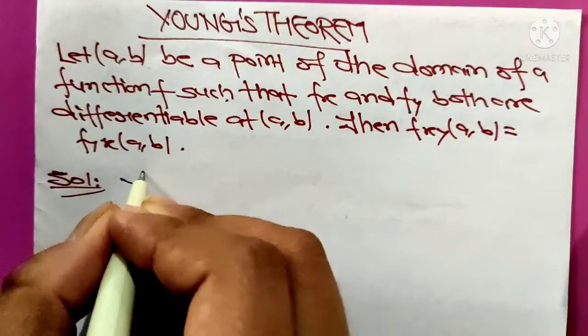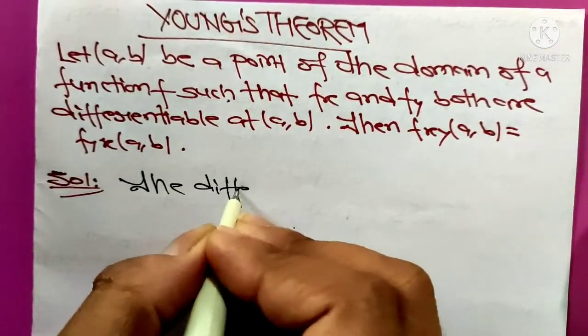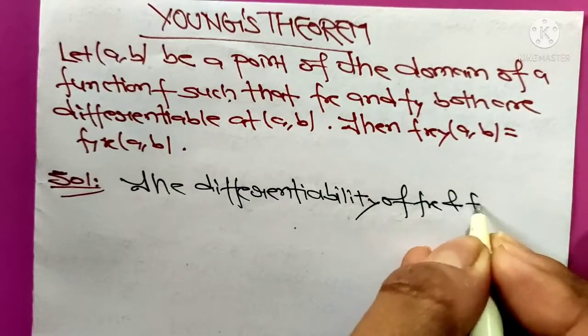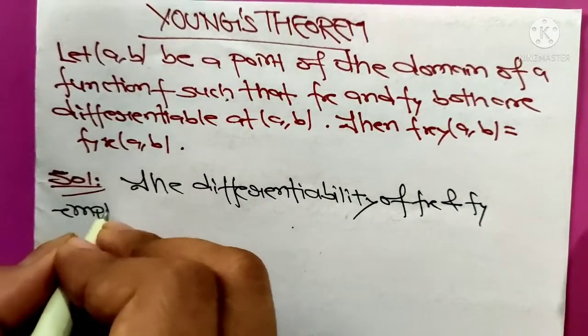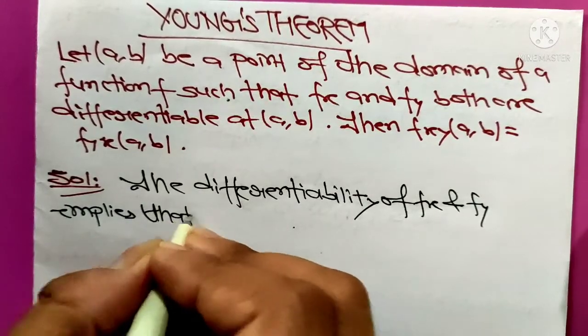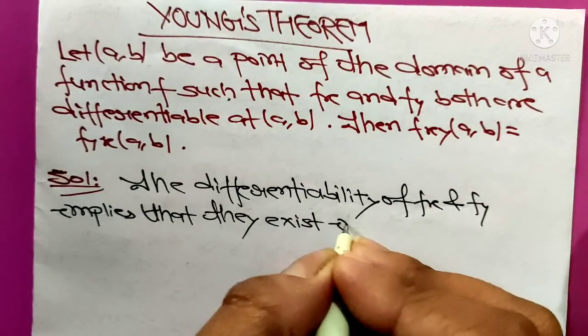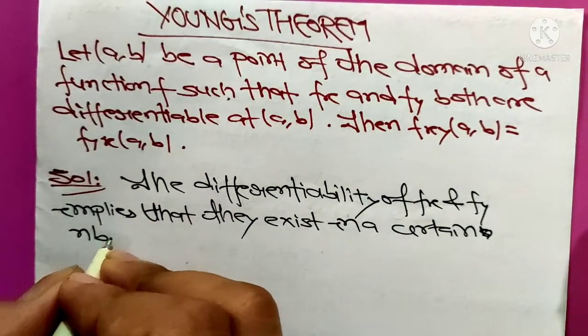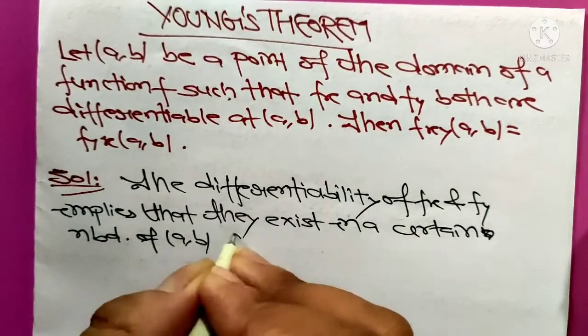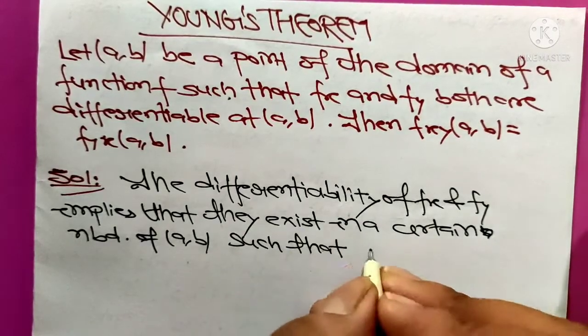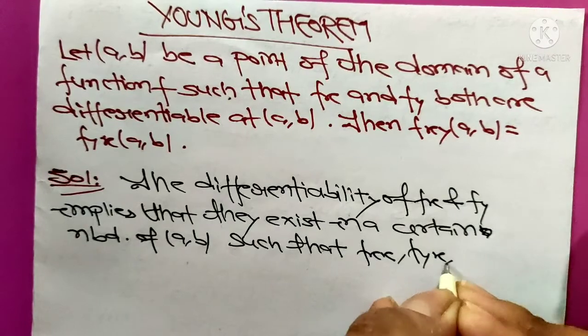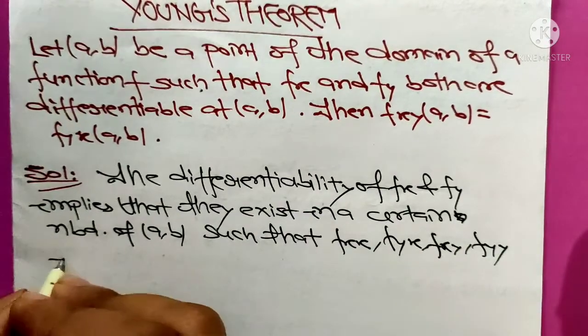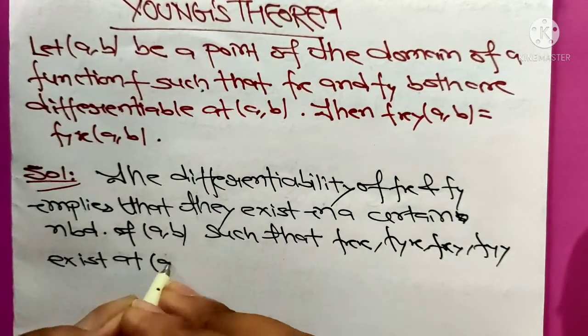Let's see the solution. The differentiability of fx and fy implies that they exist in a certain neighborhood of point ab such that fx, fy, fxy, fyx exist at point ab.